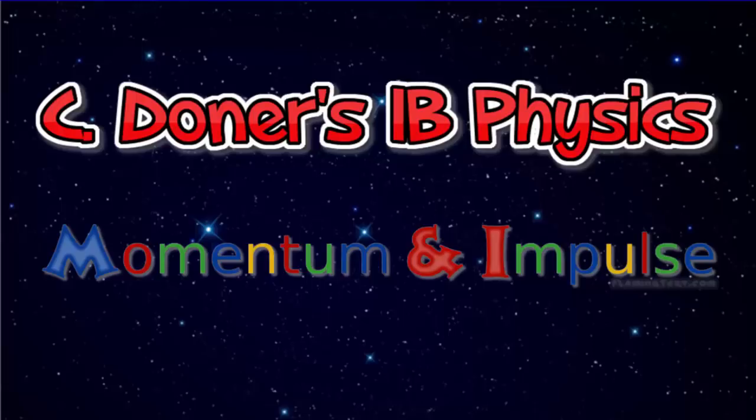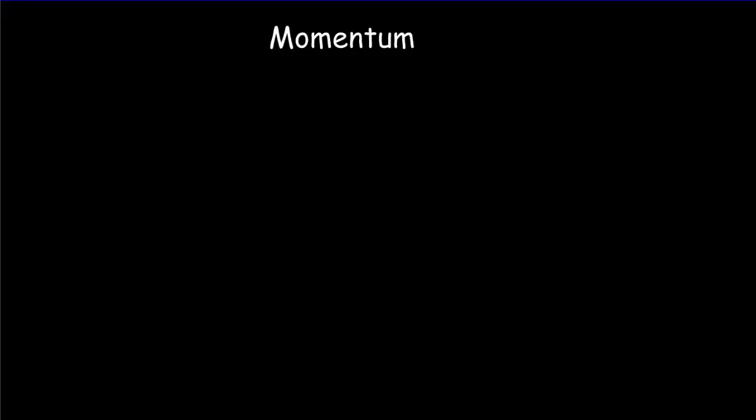Today we're going to look at momentum and impulse. So what is momentum? By definition, momentum is the product of mass and velocity.